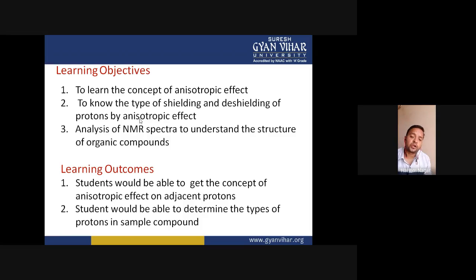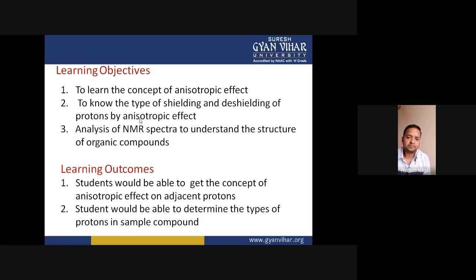For example, in the case of amines and alcohols, hydrogen bonding occurs and this can also decrease the electron density around the protons, deshielding them, which results in the shifting of the proton's NMR signal into the downfield region. The learning outcome of this lecture is that students would be able to understand the concept of anisotropic effect and hydrogen bonding, and determine the types of protons in a sample compound.